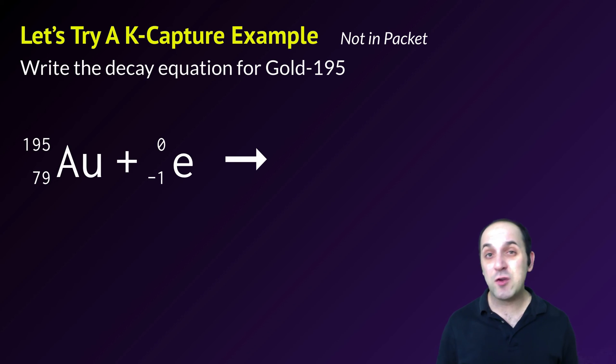Then I've got my arrow. Now I have to do a little addition. 195 plus 0 is 195, and 79 plus negative 1 is 78. Our new isotope is platinum. Does that make sense? If it doesn't, write down any questions and let's move on.